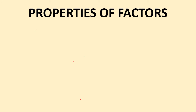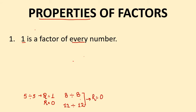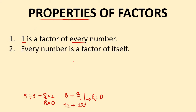Now let us discuss a few properties of factors. We know that each and every number is divisible by 1, so 1 is a factor of every number. When we divide 5 by 5, we get quotient equals 1 and remainder equal to 0. In the same way, 8 divided by 8, 12 divided by 12 — all numbers when divided by themselves give remainder equal to 0. So every number is a factor of itself.